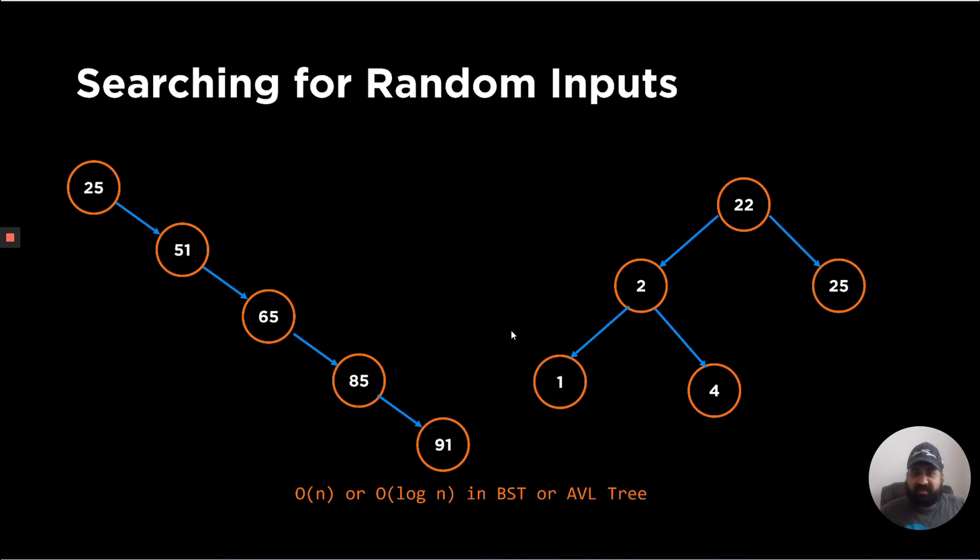So the motivation behind this is, if we are trying to search for random inputs, then our AVL trees or B trees or even our BSTs we discussed have O(n) or O(log n) complexity for random inputs. For example, if I try to search 65, we'll get this complexity. Or if you try to search 91, we'll get O(n) in case of BSTs and O(log n).